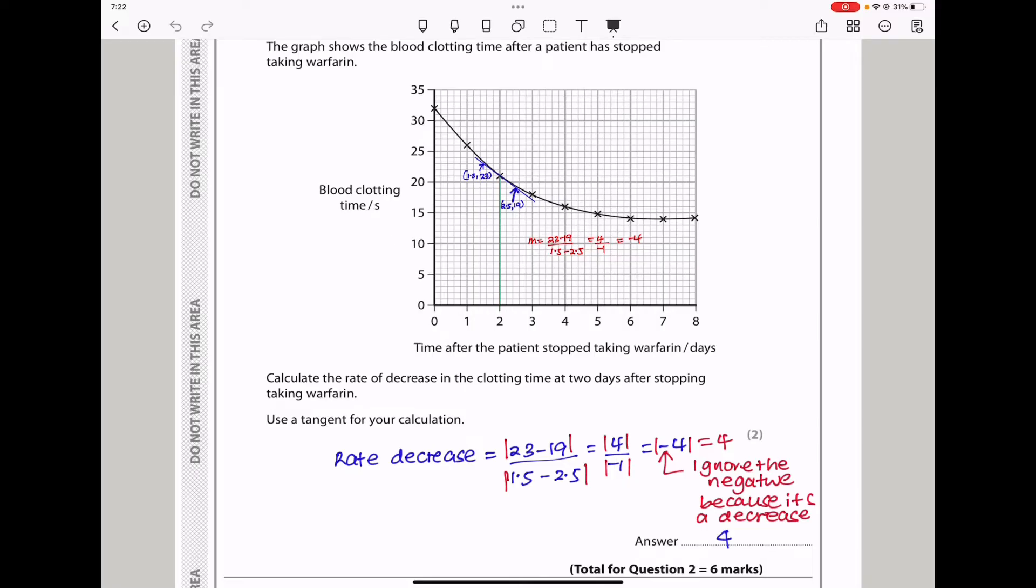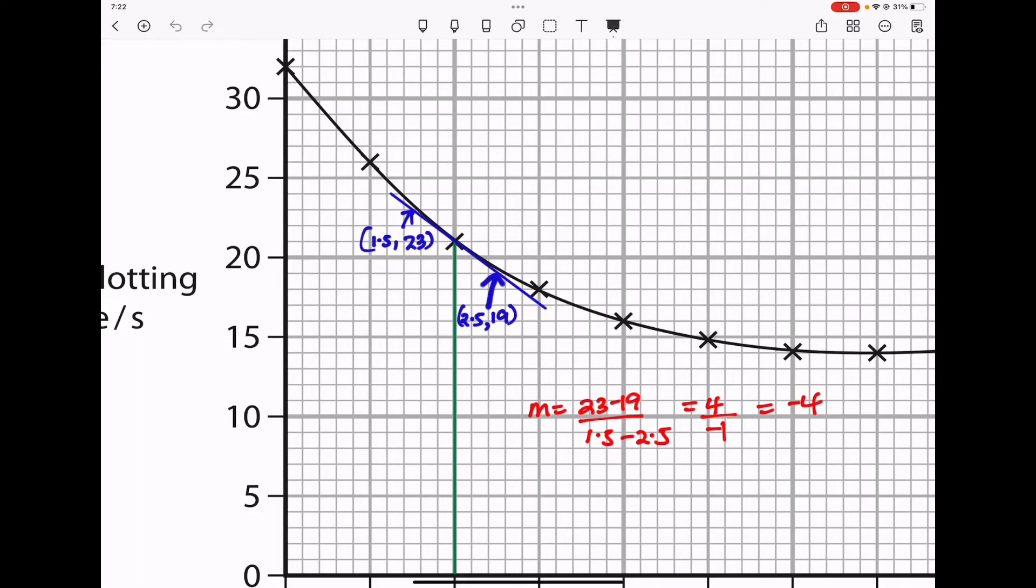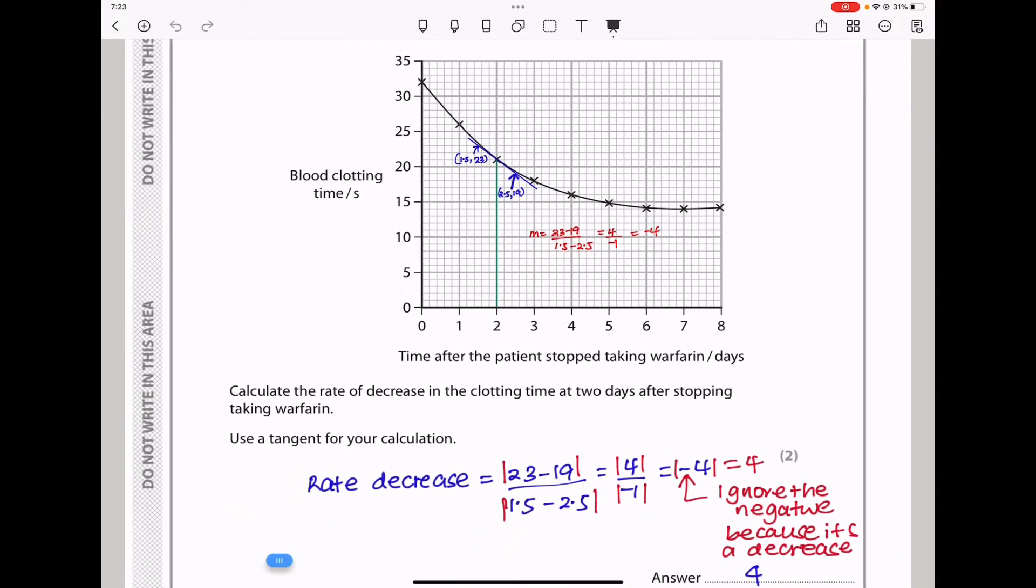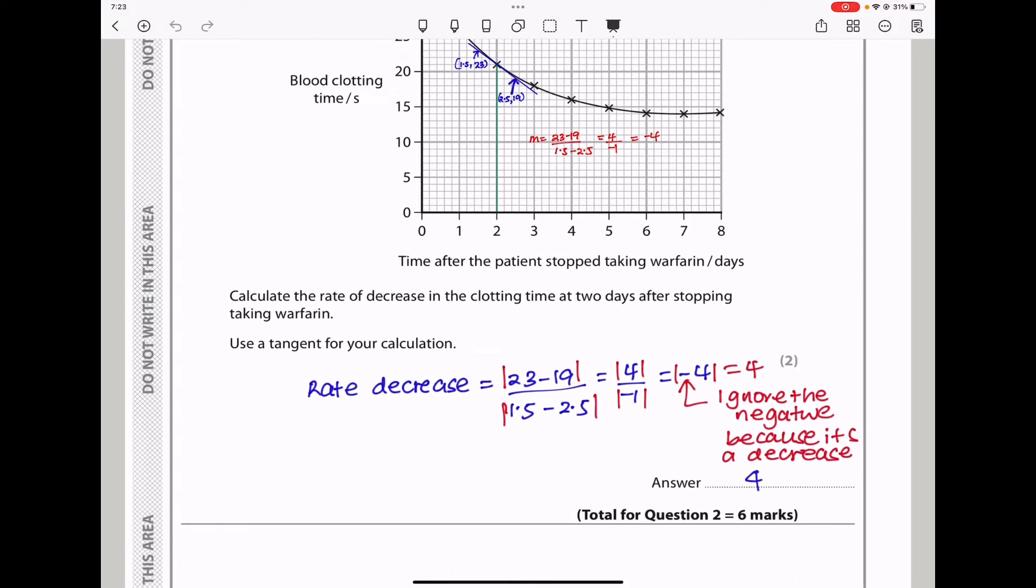I am going to zoom in a little bit to show you how I did this. So I drew a tangent at that point. This is the two-day mark. I drew a tangent there, and then I found specific points around the tangent I had drawn. I took this point here, which is 1.5, 23, and that point here, which is 2.5, 19, and calculated my gradient as here: 23 minus 19 divided by 1.5 minus 2.5, and that gave me 4 over negative 1, which was negative 4. However, the question asked us about decrease. So since it's a decrease, then I have to find the magnitude of that. So I converted it to a positive value. The lines I drew here are to show you that whatever I get should be positive because they wanted to get the rate of decrease. So the answer was 4.